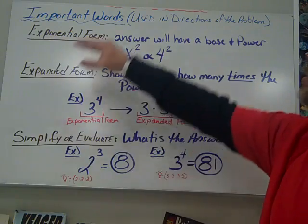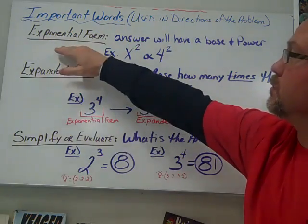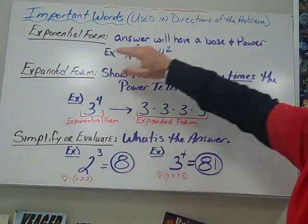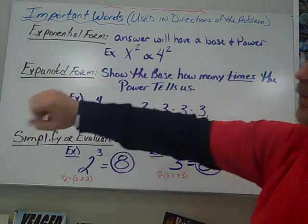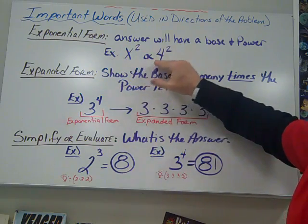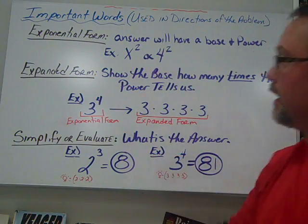Other important words that we want to know, these are used generally in the directions of the problem. First one is exponential form. Answers will have a base and a power. So kind of what we showed on the last slide of x squared or four squared. You have the base, you have the power, it's a compact form.